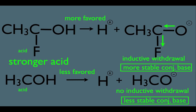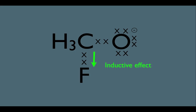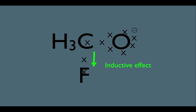Let's understand this a little better by looking at our conjugate base up close. These two bonds are the sigma bonds in this molecule — let's convert them to electrons. Because F is more electronegative than C, F will pull the electrons in that sigma bond toward itself, creating an inductive effect. That in turn causes the electrons between the carbon and the oxygen to move toward the carbon, stabilizing this conjugate base.